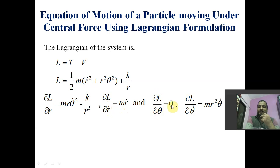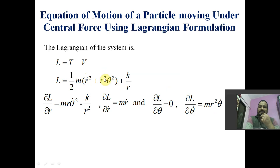The derivative of L with respect to theta is 0, because in the Lagrangian there is no theta term — only a theta-dot term — so del L by del theta equals 0. The derivative of L with respect to theta-dot is m r squared theta-dot, because theta-dot is present in that term and the derivative with respect to theta-dot gives m r squared theta-dot.